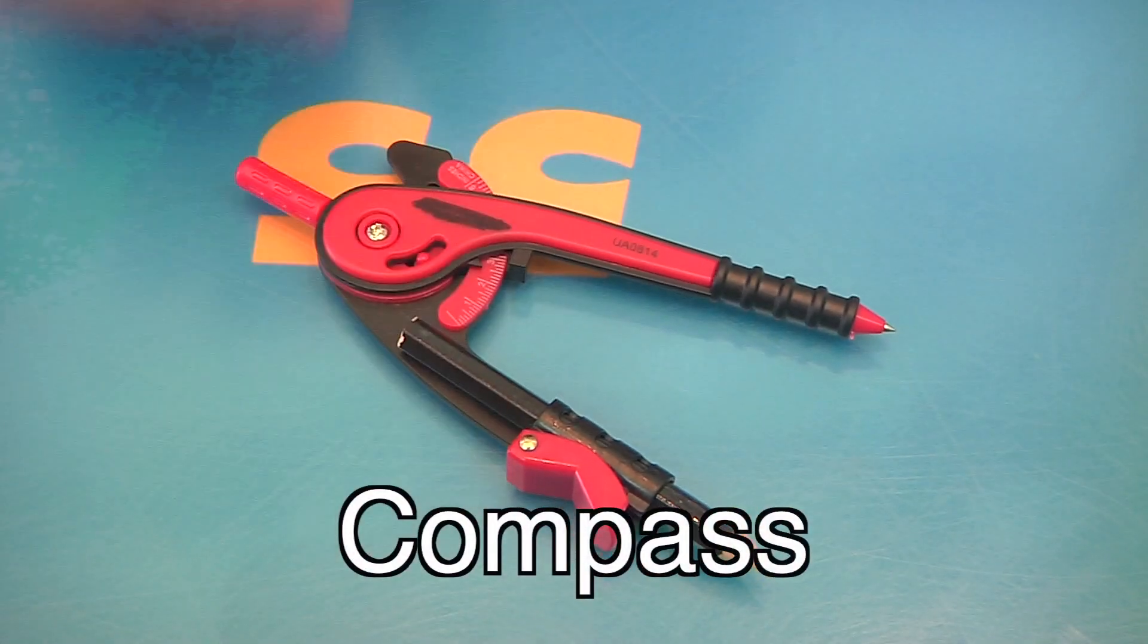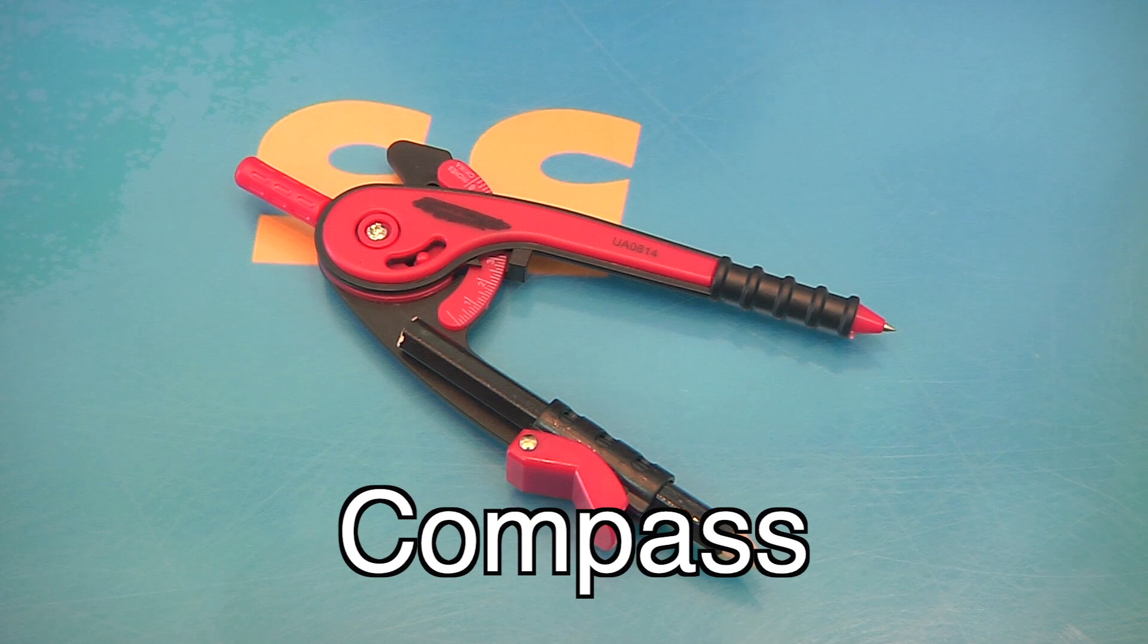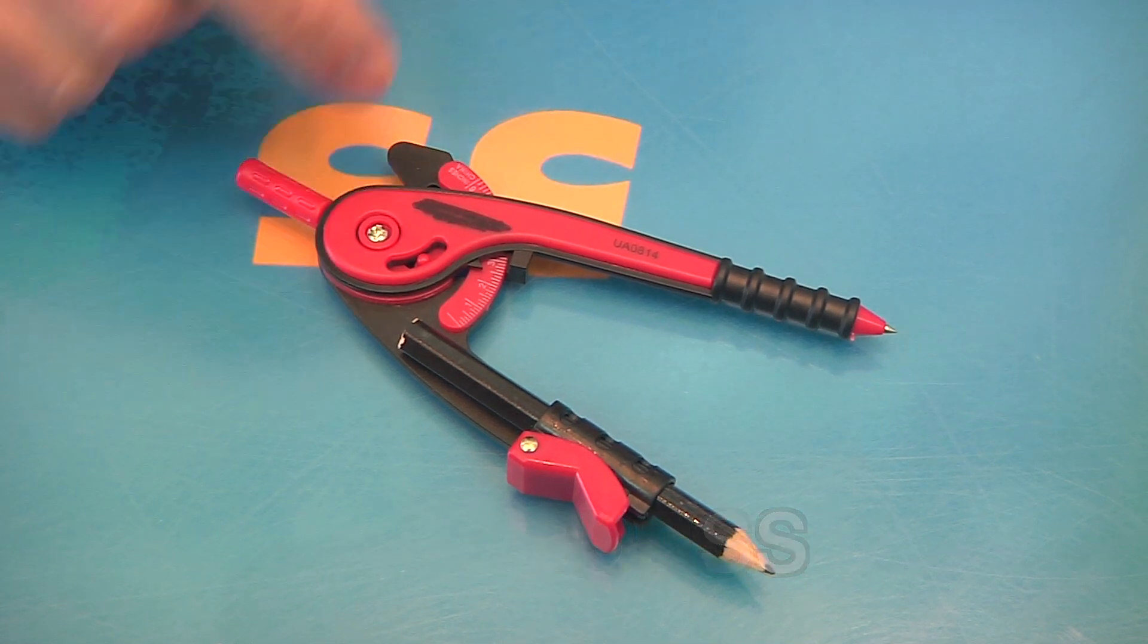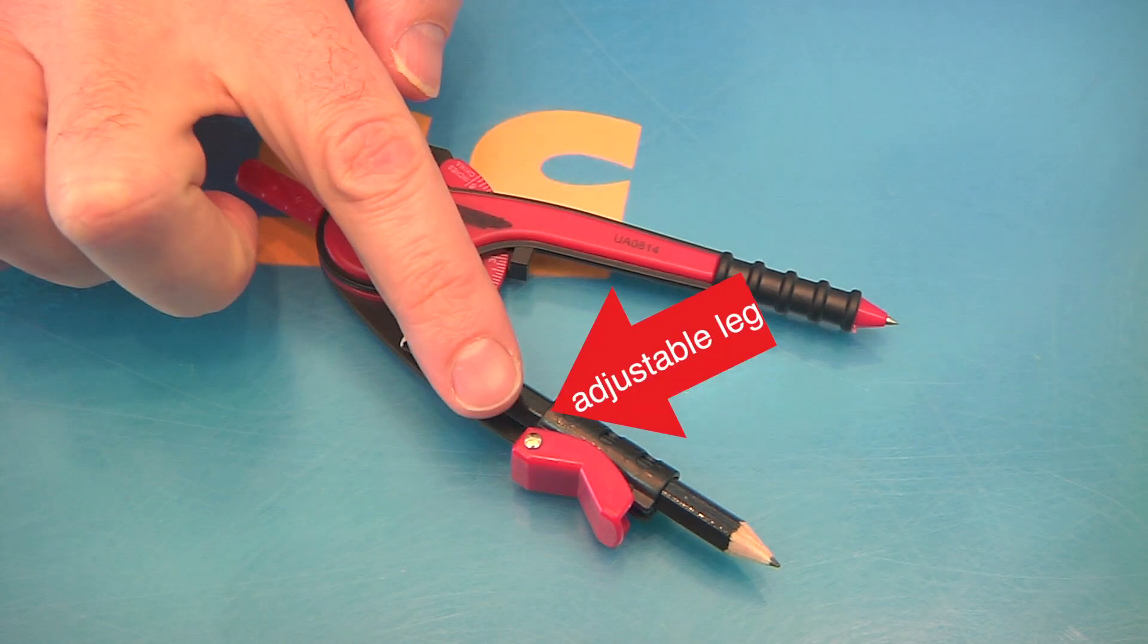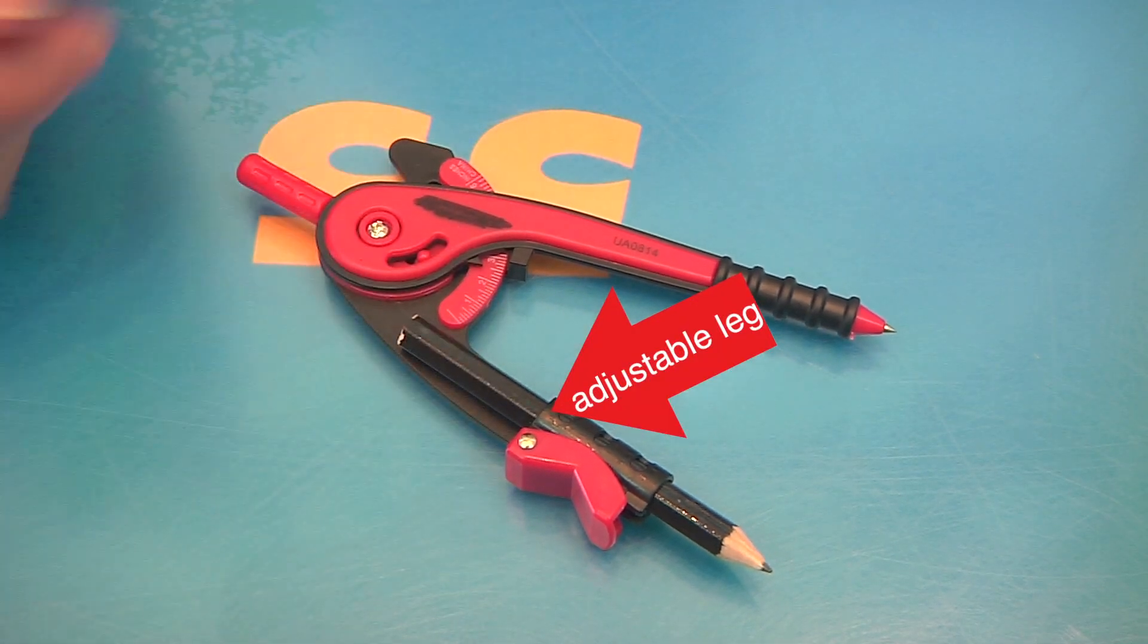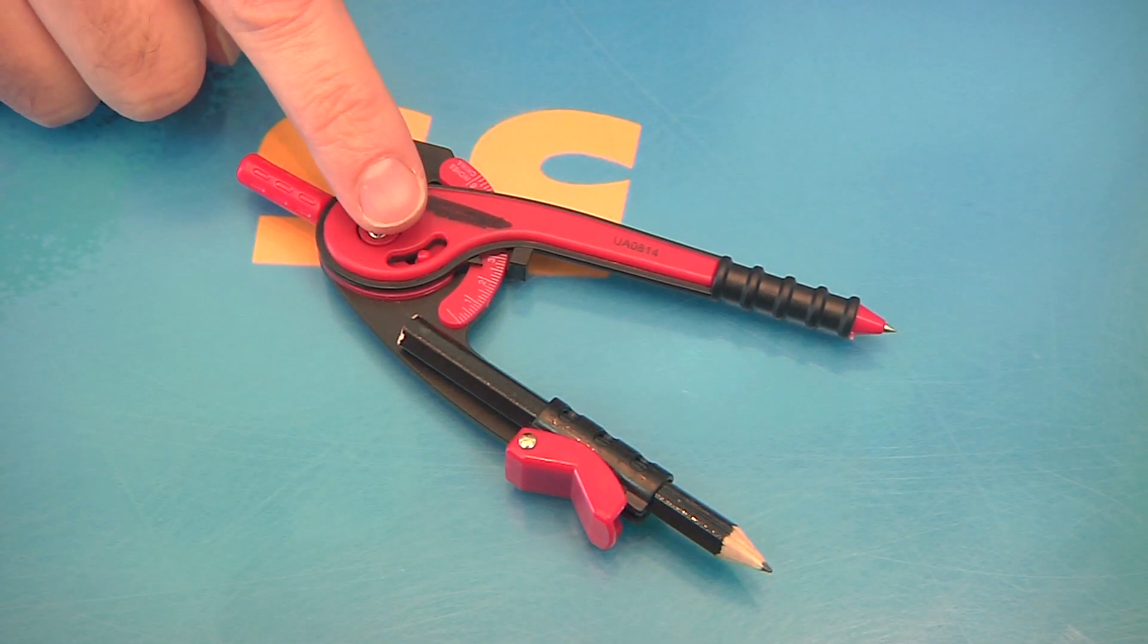A compass is a math tool used to draw arcs and to draw circles. It's basically two legs, one with a pointed end, that's the steady leg, and one with a pencil or other writing tool, that's the adjustable leg, both connected at a hinge.